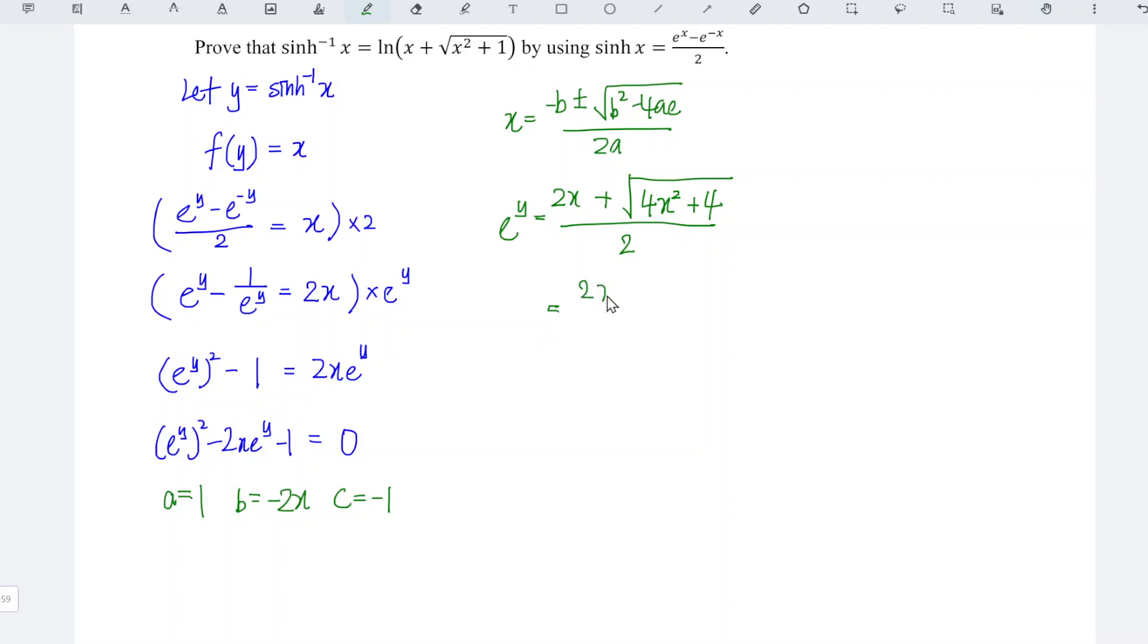So which means that we have 2x plus, 4 and 4 common factor, take out square root of 4 is 2 square root of x squared plus 1 divided by 2. Simplify we should obtain x plus square root of x squared plus 1.